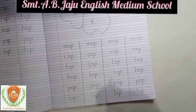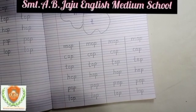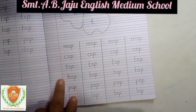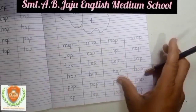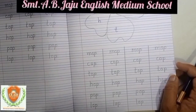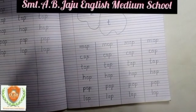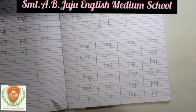So today we learned and wrote three letter words using the OP word family. You also write down like this — do the activity, make new words, and write two pages of three letter words. Write very properly and neatly. Sharpen your pencil and then write. We will meet in the next video — till then bye bye students, thank you.